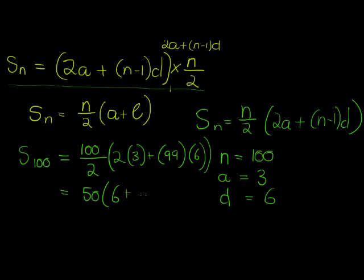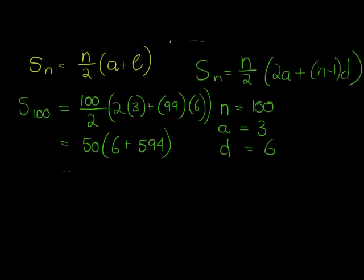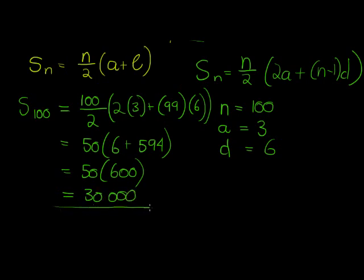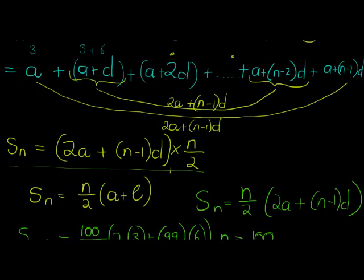So what do we get? That's 600. 50 times 600—oh that's an easy one—that's 30,000. Cool! I was able to add 100 terms in probably less than two minutes.